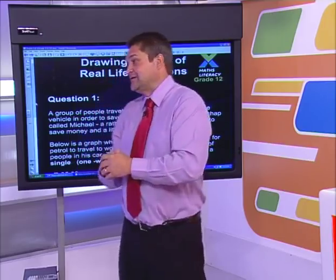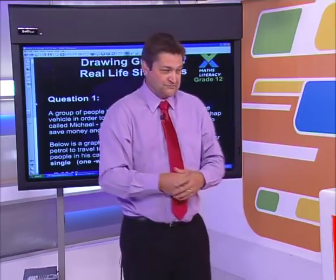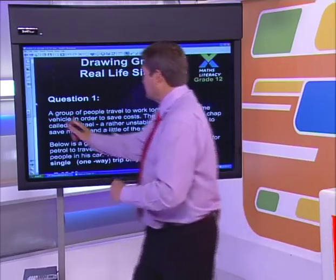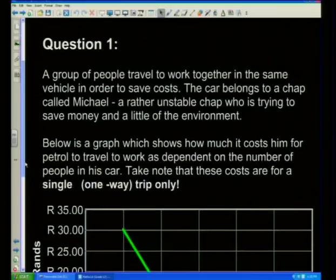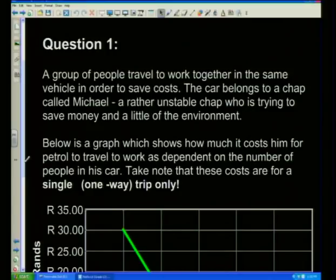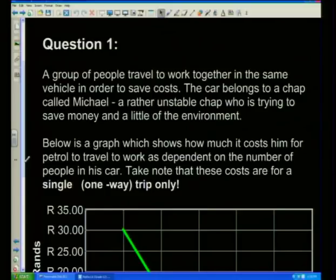The best way to learn is by doing examples. So that's what we're going to look at now. Question one — it's all about drawing graphs in real life situations. A group of people travel to work together in the same vehicle in order to save costs. The car belongs to a chap called Michael. Below is a graph which shows how much it costs him for petrol to travel to work, dependent upon the number of people in his car. Note that these costs are for a single one-way trip only.